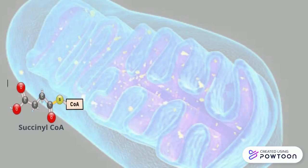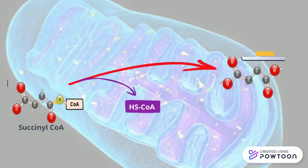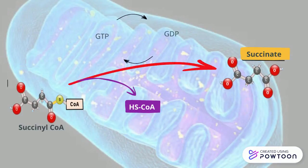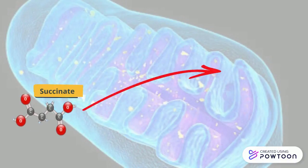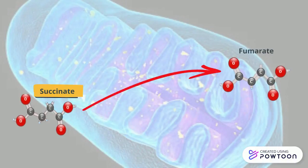Succinyl-CoA will then release its CoA to form succinate. In the process, one phosphate will go to GDP to form GTP. Succinate will then become fumarate, and one FAD molecule will become FADH₂.